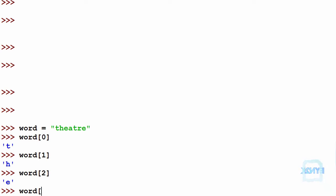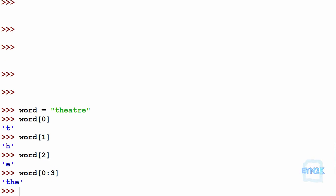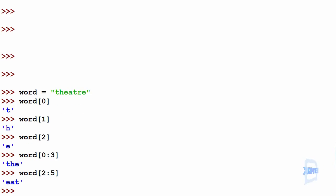And then we get the. To get the word eat, we'd have to go from word 2 to 5, and that will get us eat. To get at, we'd go from word 3 to 5, giving us at.